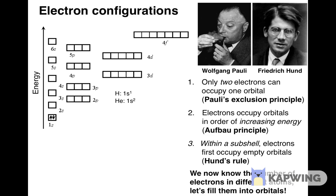For lithium, atomic number 3, the first two electrons are placed in the only orbital of the 1s subshell just like for helium. However, Pauli's exclusion principle prohibits placing the third electron in the same orbital. Therefore, according to the Aufbau principle, this electron has to go into the orbital where it will have the next lowest energy — the only orbital of the 2s subshell. The electron configuration for lithium is written as 1s² 2s¹, indicating two electrons in the 1s subshell and one electron in the 2s subshell.